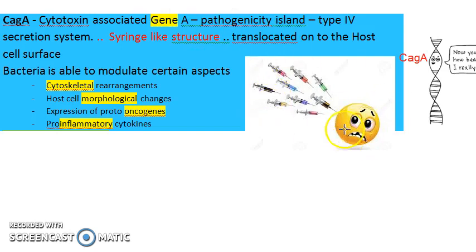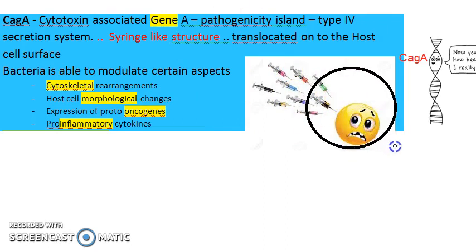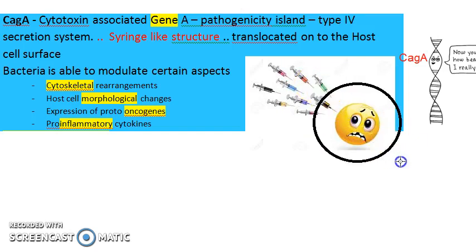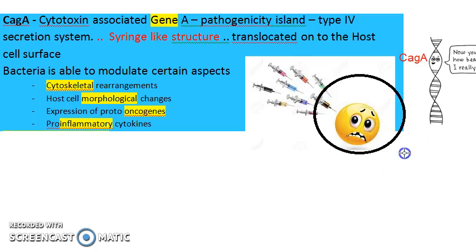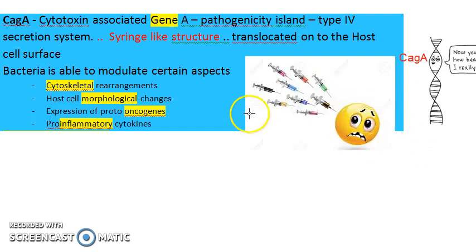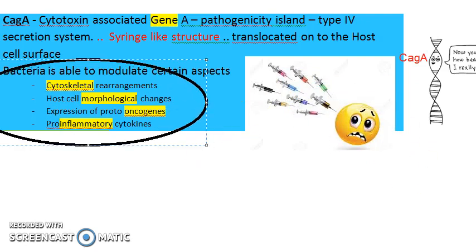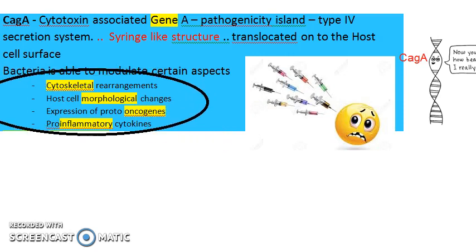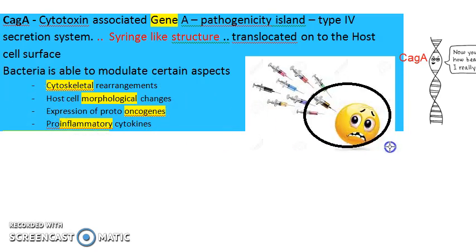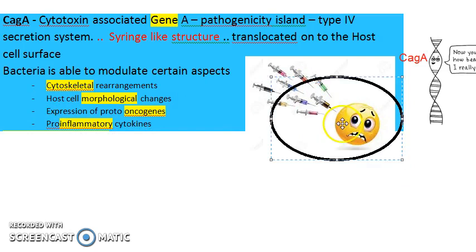H. pylori is able to modify the cytoskeleton of the host cell, modify the morphology of the host cell, help in expression of proto-oncogenes, and also promote release of pro-inflammatory cytokines. These are four ways H. pylori damages the host cell through the CagA/Type 4 secretion system. That's point two.